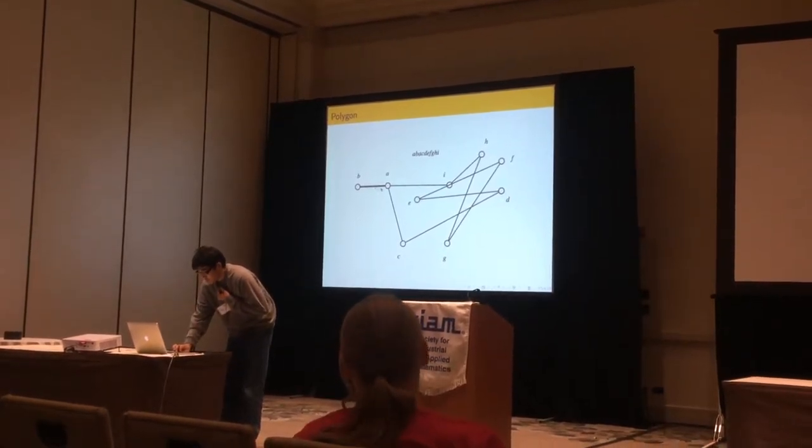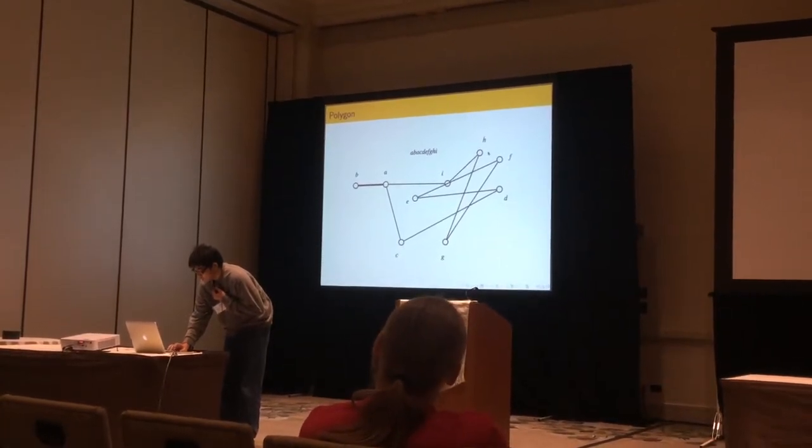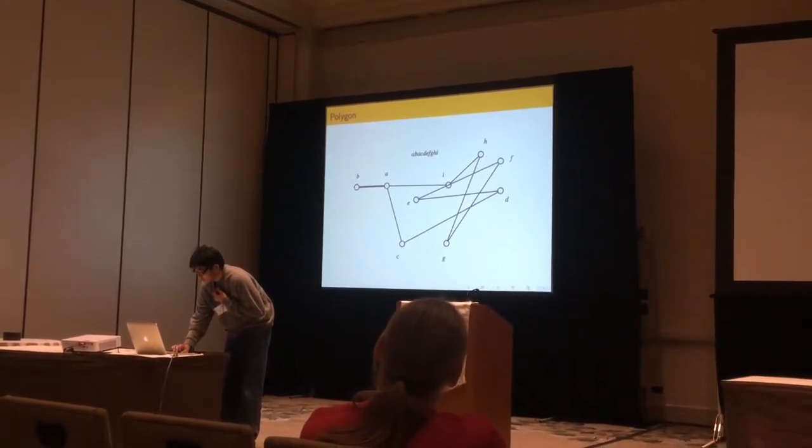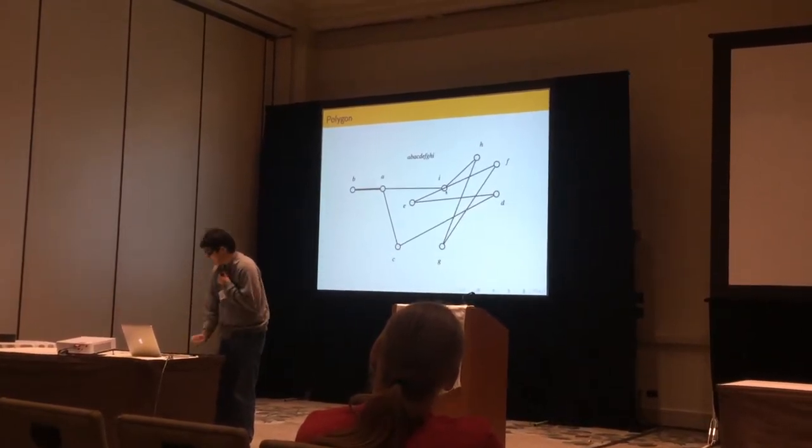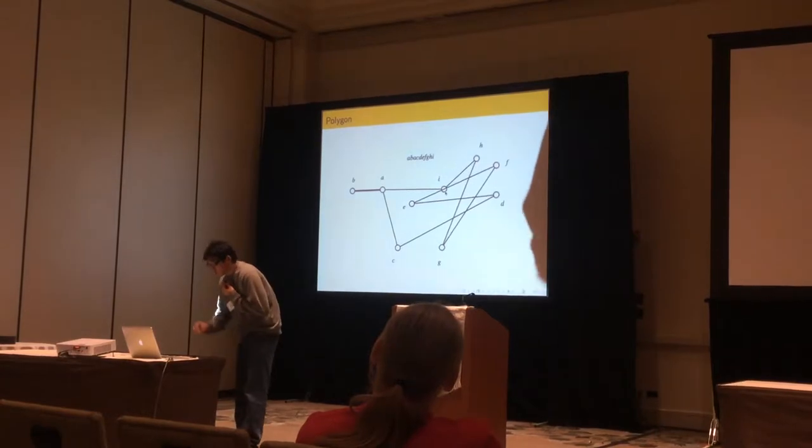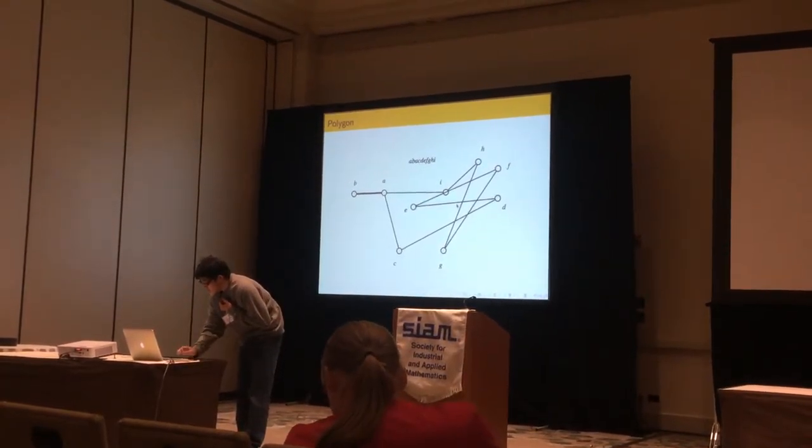So here, the polygon is A, B, E, C, D, E, F, H, G, H, I. And as you can notice, there are intersections. And there are two specific things I want you to notice.